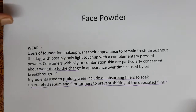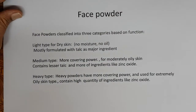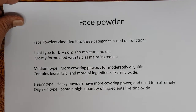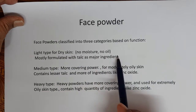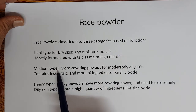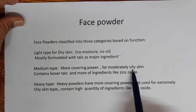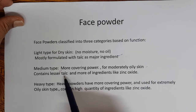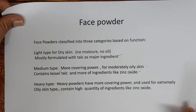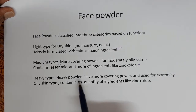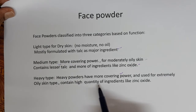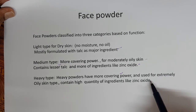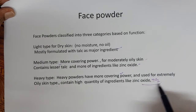Consumers with oily or combination skin are particularly concerned about wear due to the change in appearance over time caused by oil breakthrough. Wear refers to how long the powder stays on the skin. Ingredients used to prolong wear include oil-absorbing fillers to soak up secreted sebum and film formers to prevent shifting of the deposited film. Face powders can be classified as light type for dry skin — mostly formulated with talc as the major ingredient; median type with more covering power for moderately oily skin containing less talc and more zinc oxide; and heavy type for extremely oily skin with high quantities of zinc oxide, titanium dioxide, etc.